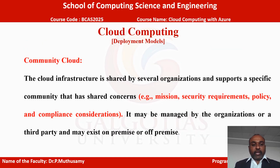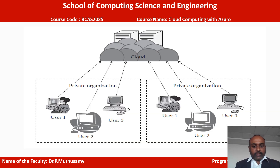In this slide, we are going to discuss the last deployment model: community cloud. The cloud infrastructure is shared by several organizations and supports a specific community that has shared concerns — for example, mission, security requirements, policy, and compliance considerations. It may be managed by the organizations or a third party and may exist on premises or off premises. This diagram shows a community cloud with different types of private organizations sharing the infrastructure.